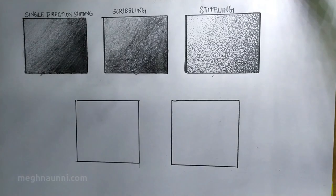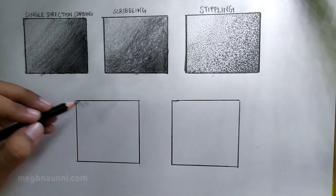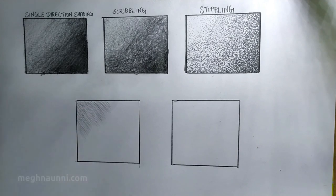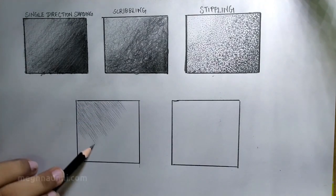The next method is an easier method called hatching. Apply short thin strokes using the pencil and try to leave some small spaces between the strokes.